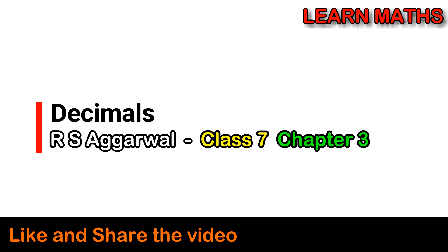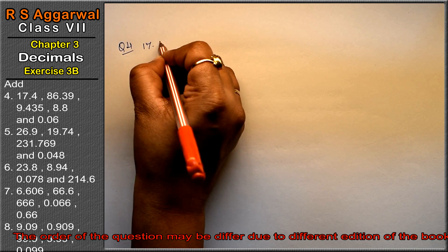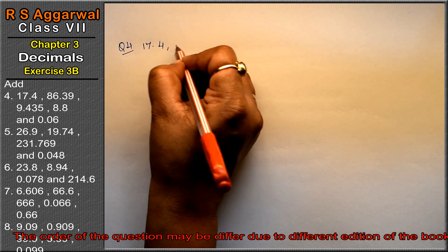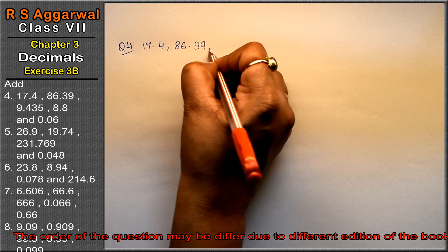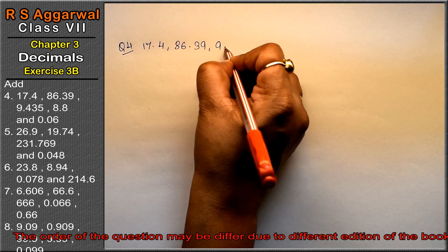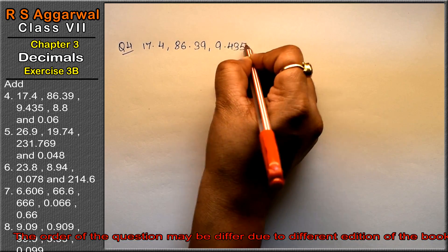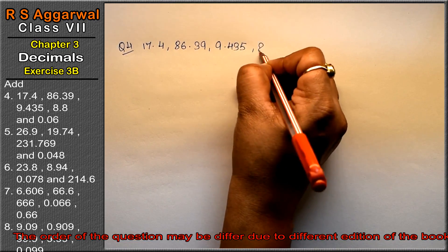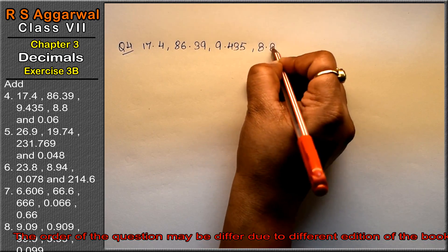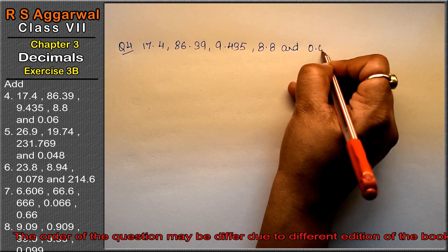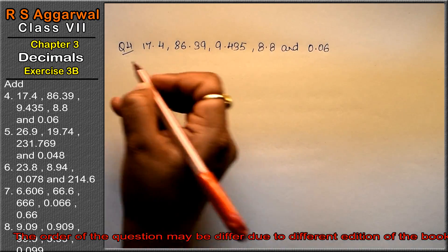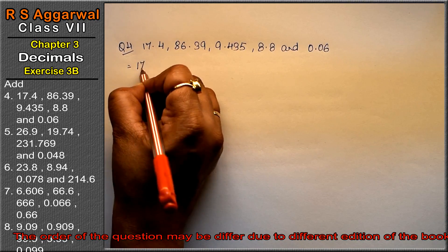Let's do question number 4. Question number 4 is 17.4, 86.39, 9.435, 8.8 and 0.06. Let's do like fraction.